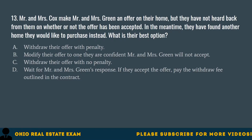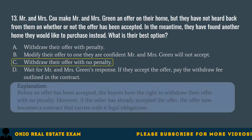Question 13. Mr. and Mrs. Cox make Mr. and Mrs. Green an offer on their home, but have not heard back on whether the offer has been accepted. In the meantime, they found another home they would like to purchase instead. What is their best option? A. Withdraw their offer with penalty. B. Modify their offer to one they are confident Mr. and Mrs. Green will not accept. C. Withdraw their offer with no penalty. D. Wait for Mr. and Mrs. Green's response; if they accept the offer, pay the withdrawal fee outlined in the contract. The correct answer is C. Withdraw their offer with no penalty. Before an offer has been accepted, the buyers have the right to withdraw with no penalty. However, if the seller has already accepted the offer, it becomes a contract that carries legal obligations.